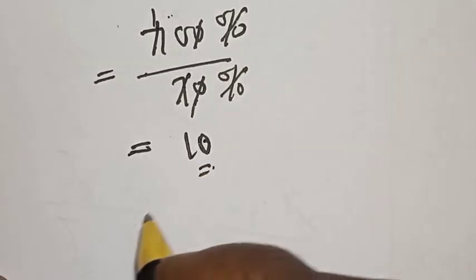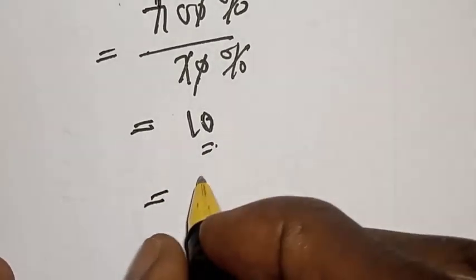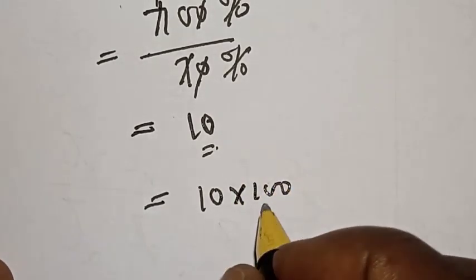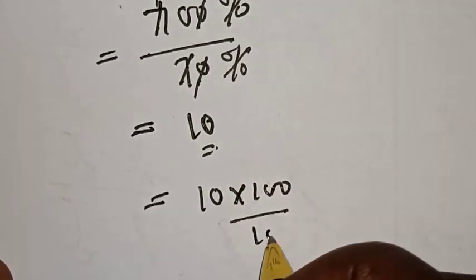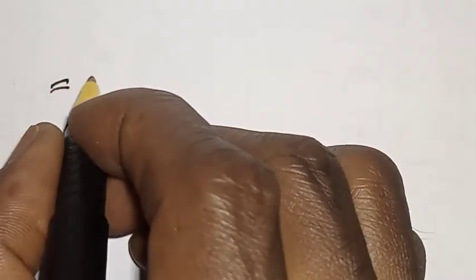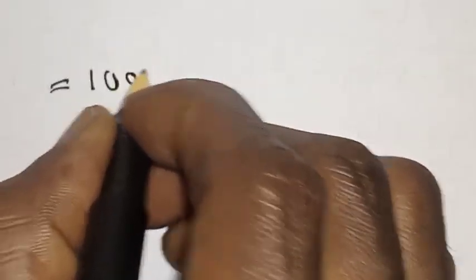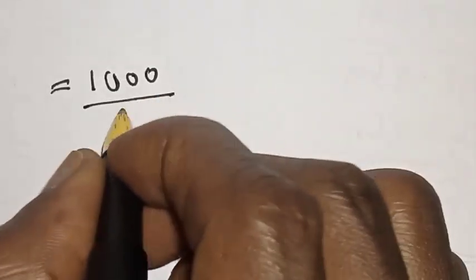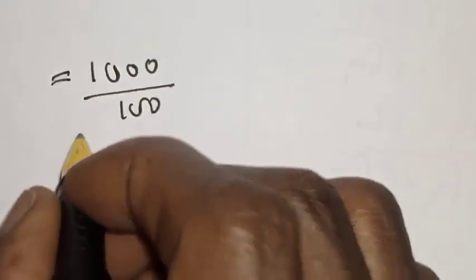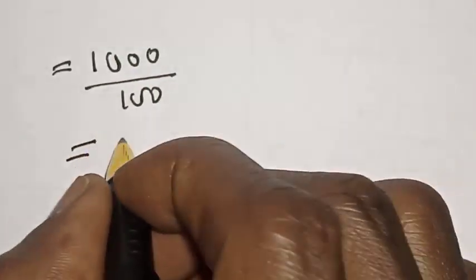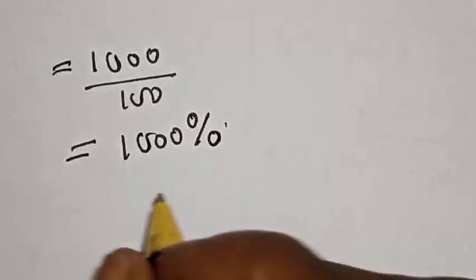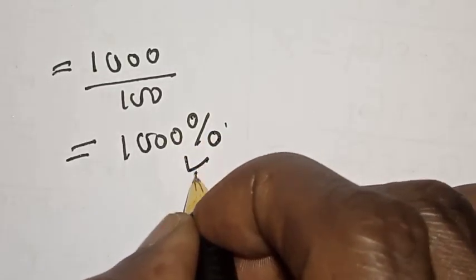So let's see. We take 10 and multiply it by 100 divided by 100, because we have to find the percentage. This is equal to 1000 divided by 100, and because of the percentage sign in the options, this is equal to 1000%. This is our final answer.